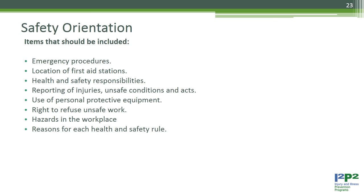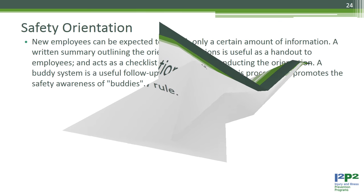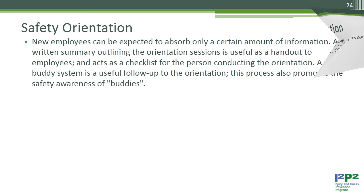Additional orientation items include: use of personal protective equipment, right to refuse unsafe work, hazards in the workplace, and reasons for each health and safety rule. New employees can be expected to absorb only a certain amount of information. A written summary outlining the orientation sessions is useful as a handout and acts as a checklist for the person conducting the orientation. A buddy system is a useful follow-up that also promotes the safety awareness of buddies.